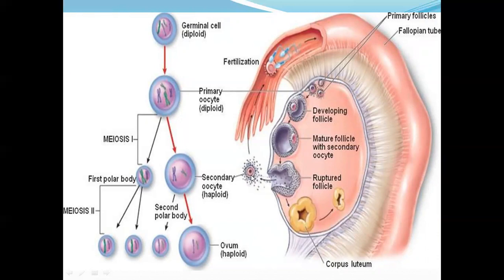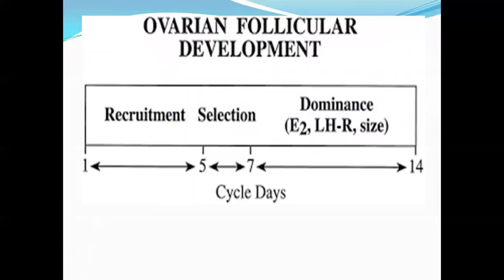The secondary oocyte expelled at ovulation, having a haploid number of chromosomes, is fertilized by the sperm to form the ovum. Follicular development has many phases: in the first 14 days before ovulation, the first 5 days is recruitment of 2 or 3 primary follicles. Then 5 to 7 days allows selection — 2 days for selection — and subsequently there is dominance of one follicle depending on certain criteria, which we will discuss later.